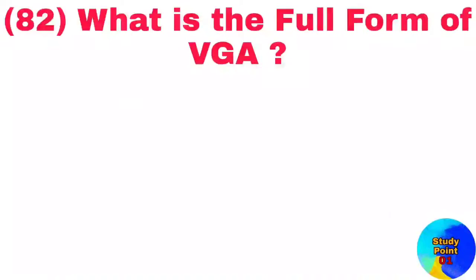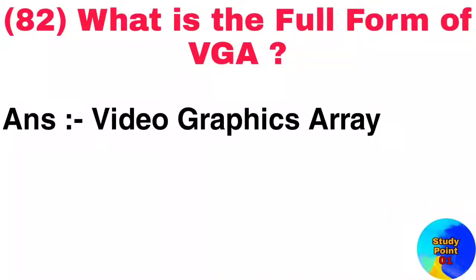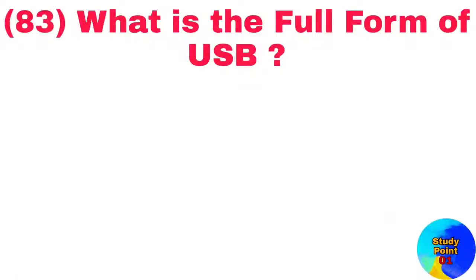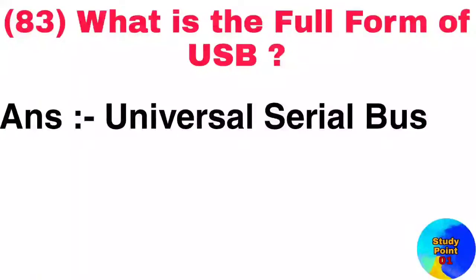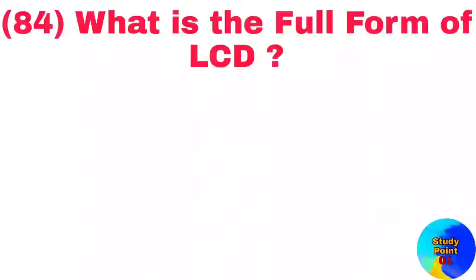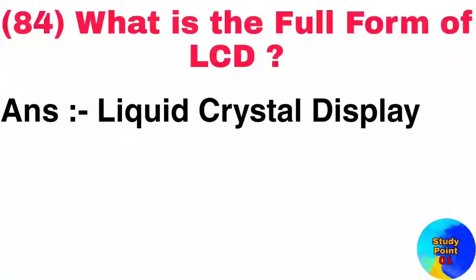Question number 82: What is the full form of VGA? Answer: Video graphics array. Question number 83: What is the full form of USB? Answer: Universal serial bus. Question number 84: What is the full form of LCD? Answer: Liquid crystal display.